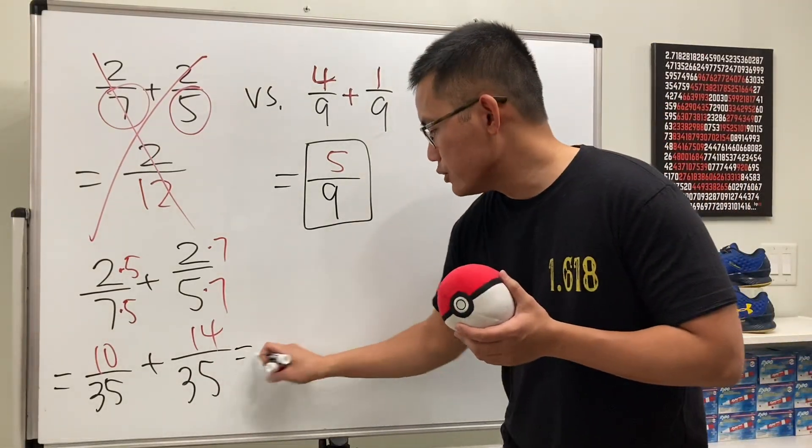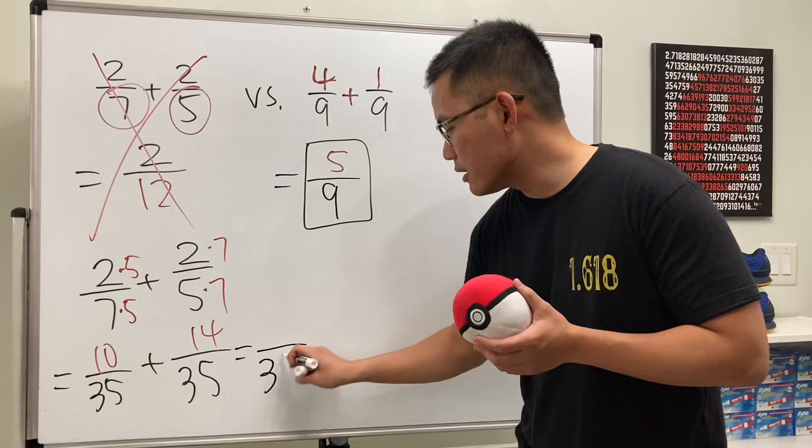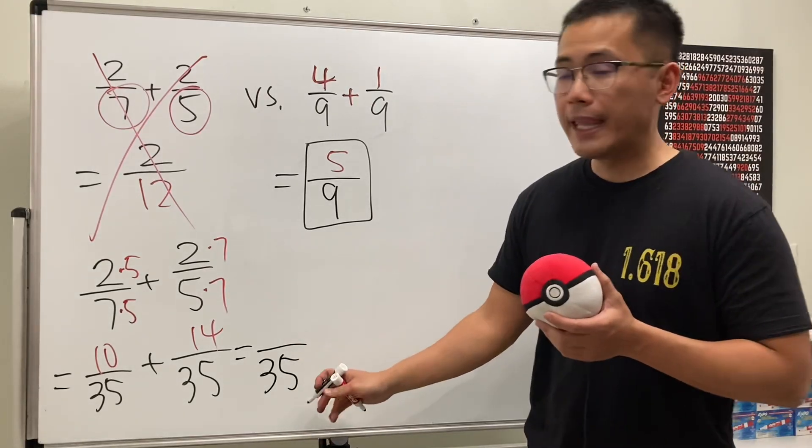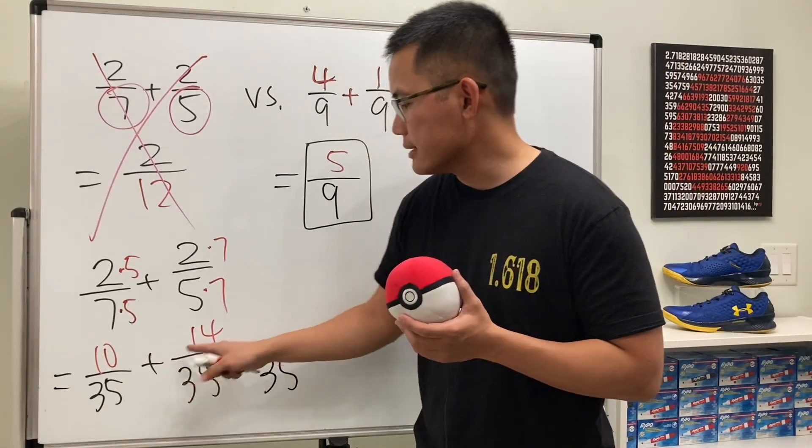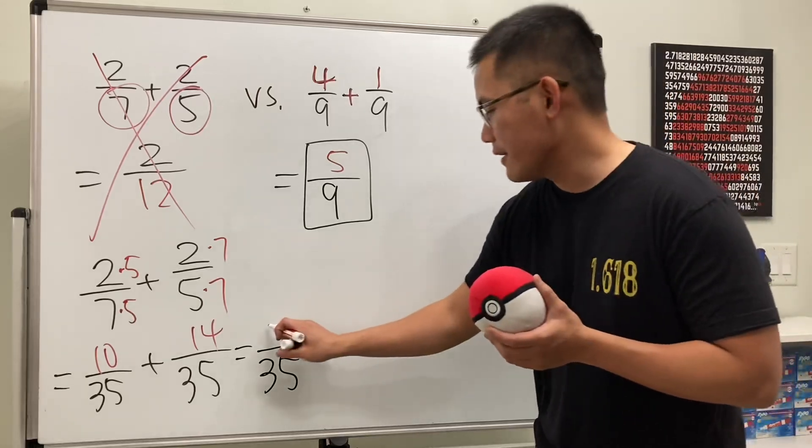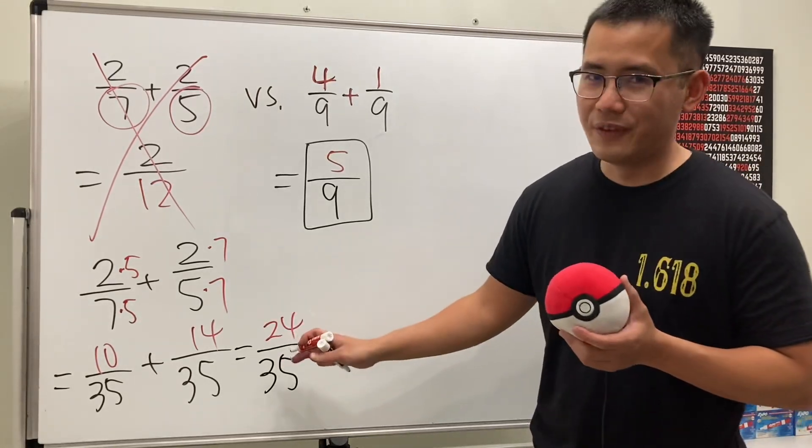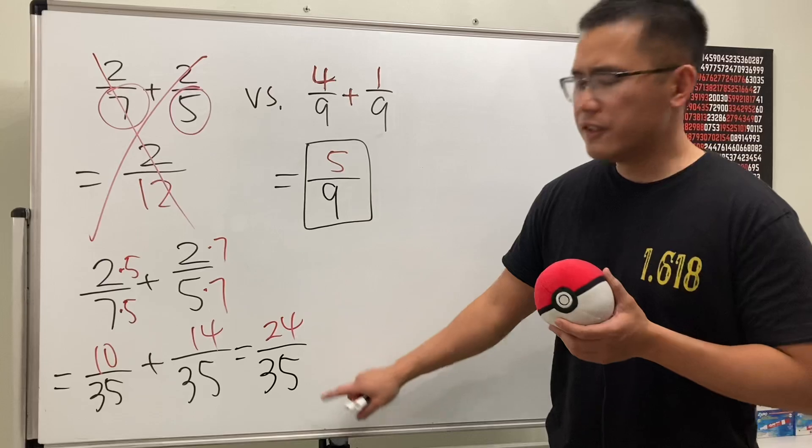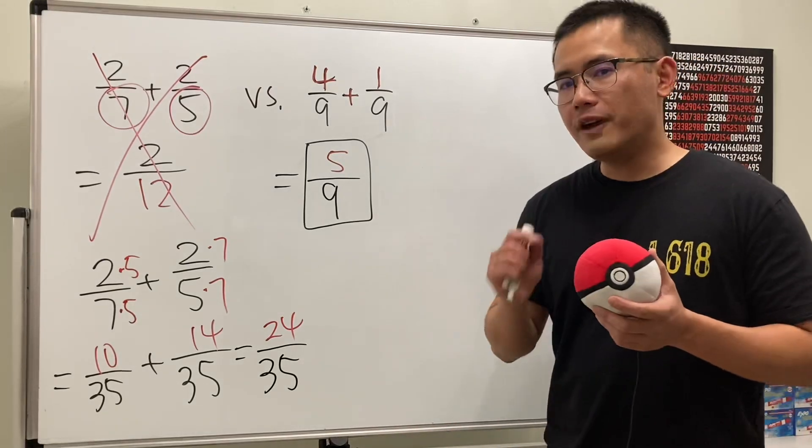It will be the same situation like this, so we can just go ahead and keep the same denominator which is 35, and then we do 10 plus 14, which is 25... sorry, 24.